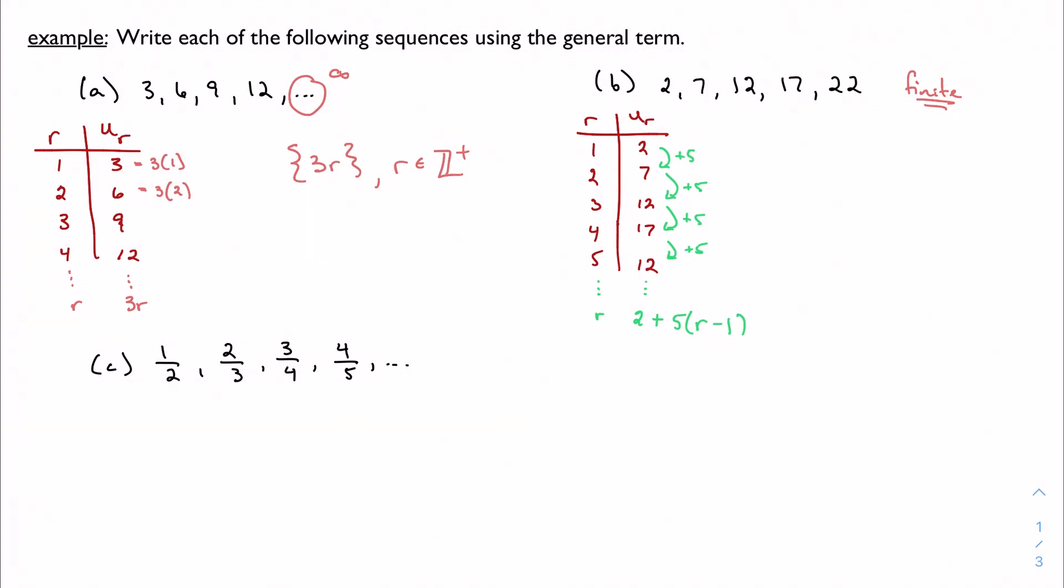We want to simplify this, so we're going to get 2 plus 5r minus 5, and I get 5r minus 3. So my general term is 5r minus 3. r is a positive integer, but this is also a finite sequence, so I need to state how many terms I have. I need my counter to stop at 5, so we're going to say r less than or equal to 5.